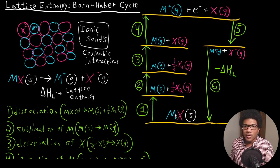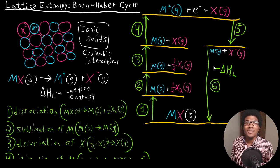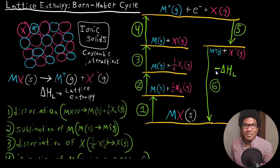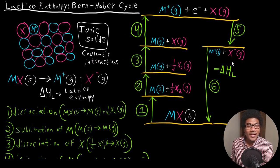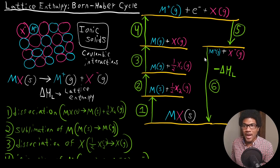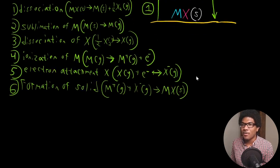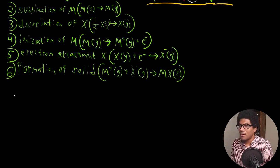Each step is really just one elementary physical change, and we add them all up to get the total lattice energy. This is all made possible because enthalpy is a state function. So how do we actually calculate the lattice energy from this? Remind yourself: this is all a cycle, so we're starting and ending in the same place. That means if we add together all of these enthalpy changes, they have to sum to zero, since we begin and end at the same ionic solid.